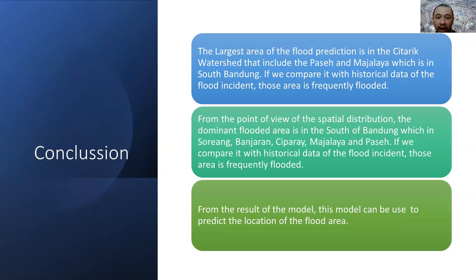The conclusion is that the largest area of the flood prediction is in the Citarik watershed, which includes Paseh and Majalaya in the south of Bandung. From the point of view of spatial distribution, the dominant flood area is in south Bandung, which includes Soryang, Banjaran, Ciparai, Majalaya, and Paseh. Comparing with historical data of flood incidents, this area is frequently flooded.